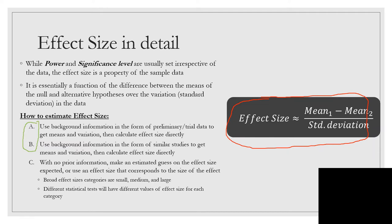The third main way to get effect size is when you have no prior information. You can make an educated guess on the effect size and you can broadly characterize size as small, medium, and large. It's important to note that different statistical tests will have different values of what makes an effect size small, medium, and large.